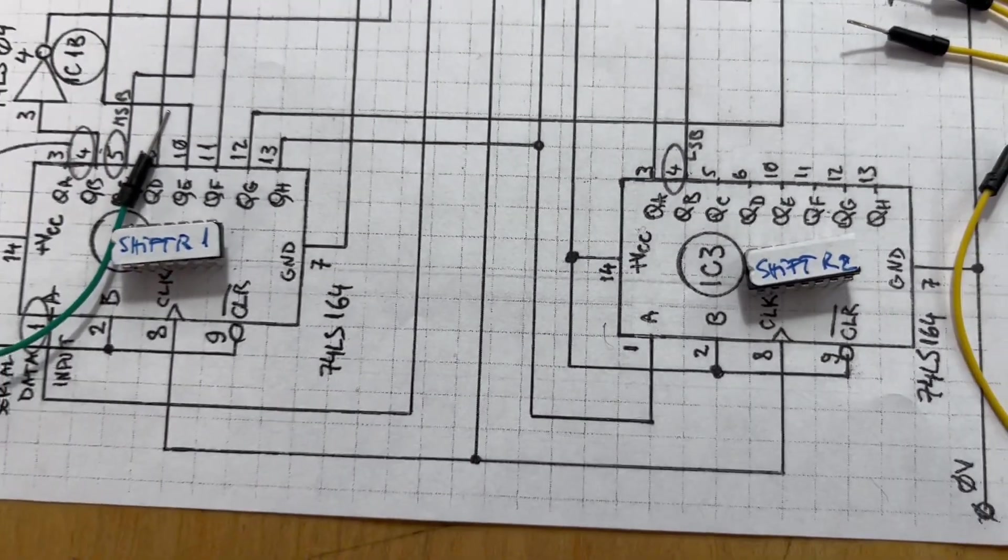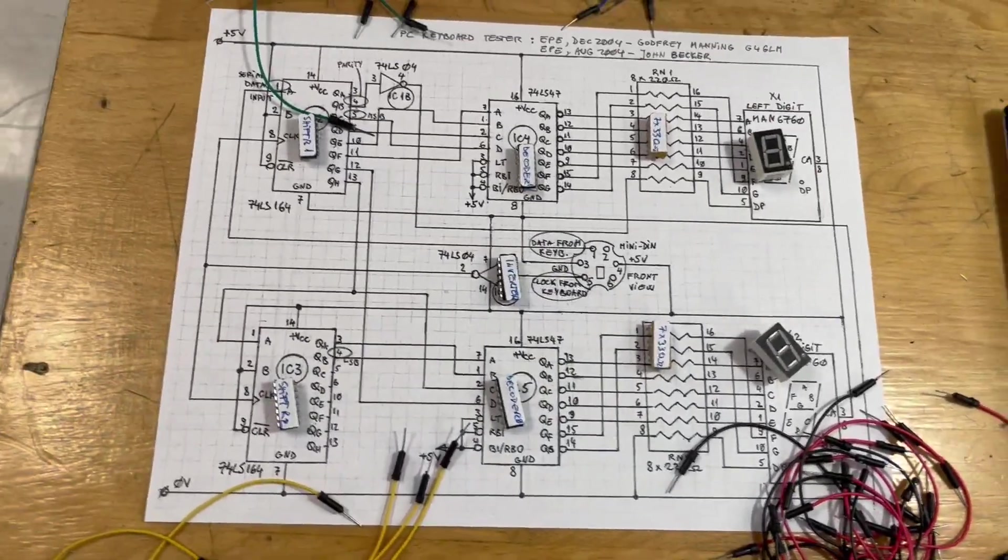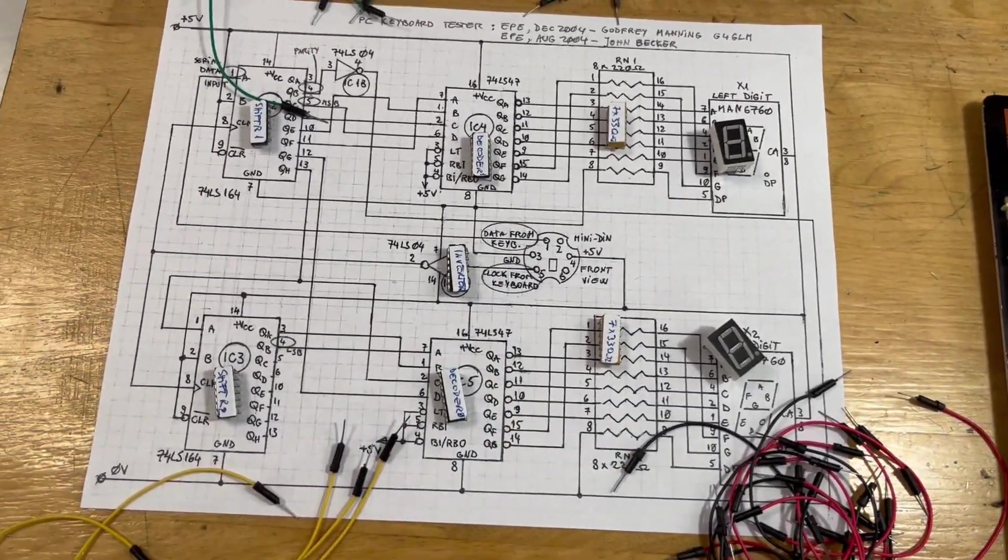We're going to have two decoders and one inverter package, and finally two shift registers, 74164. Using that diagram, we're going to reconstruct exactly the project already wired on the trainer.